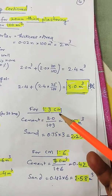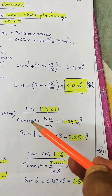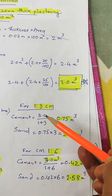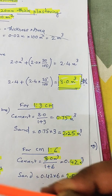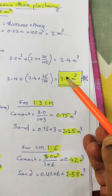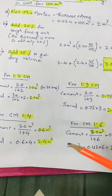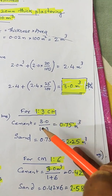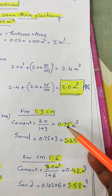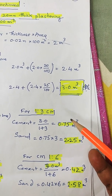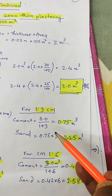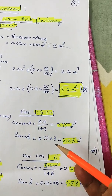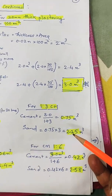Similarly, for cement mortar 1:3, the total dry volume is the same constant 3 cubic meters. Cement is 3 cubic meters divided by (1 + 3), which gives 0.75 cubic meters. Sand is 3 times the cement, so it comes out to 2.25 cubic meters.